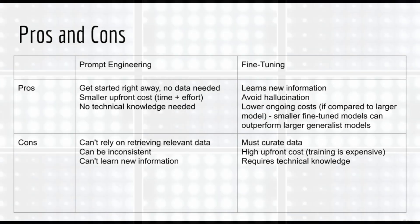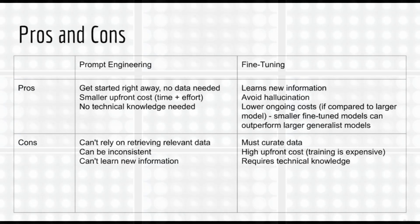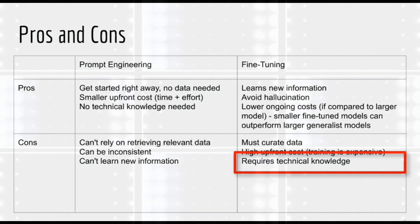Finally, let's talk about the cons of fine-tuning. One immediate disadvantage is that you need to curate data to train the model with. This isn't particularly fun or engaging. Another immediate disadvantage is the high upfront cost. Training neural networks is significantly more costly than inference. For the OpenAI API in particular, the cost is much greater than simply prompting ChatGPT. Yet another disadvantage is that fine-tuning requires technical knowledge. You need to know how deep learning works in order to understand and debug fine-tuning.